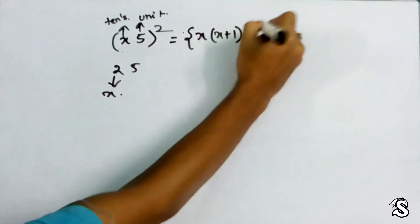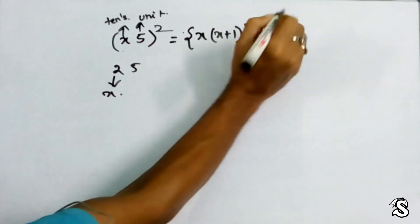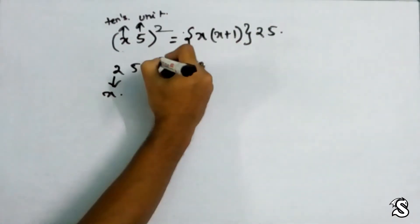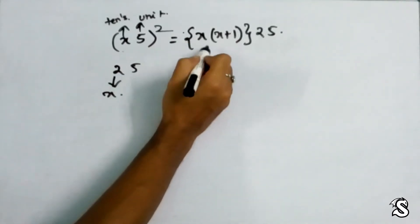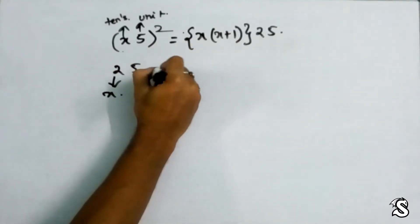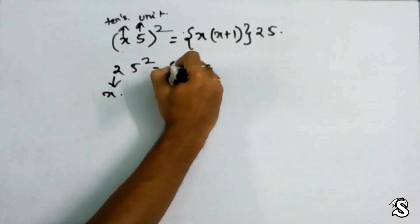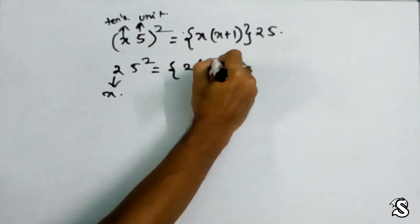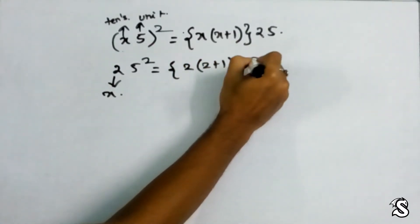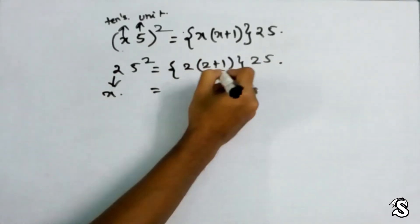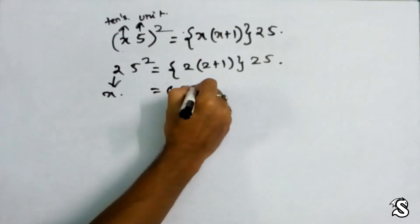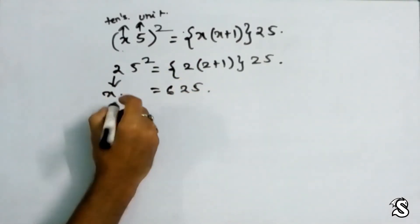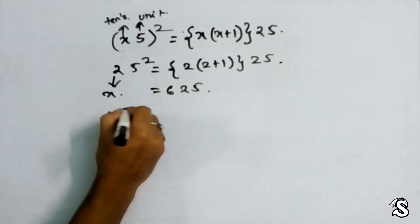So what I am going to do, the formula says x into x plus 1, and the last two digits will always be 25. For 25 square, I am taking the x value as 2. 2 plus 1, and the last two digits are 25. This will be 2 into 3, that is 6, giving 625.